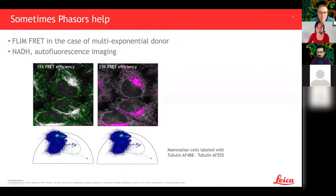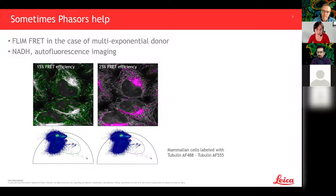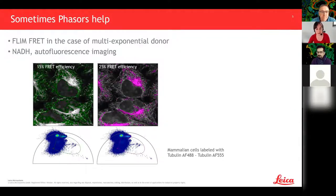Phasors can help separating species when they each have multiple components. Neither Oregon Green nor Alexa Fluor 555 are purely mono-exponential, which is why exponential fitting leads to bleed-through. Another application where phasors help a lot is FLIM-FRET in the case of a multi-exponential donor — in biology the donor is often not mono-exponential, and with phasors the FRET trajectory starting point doesn't matter.